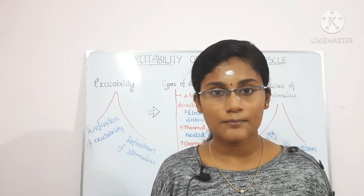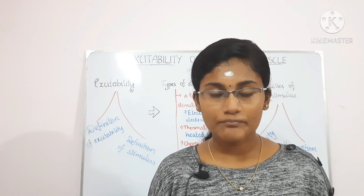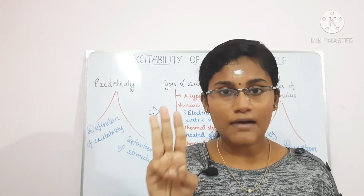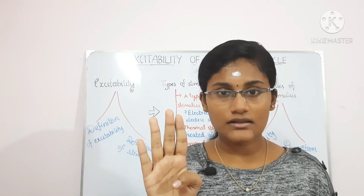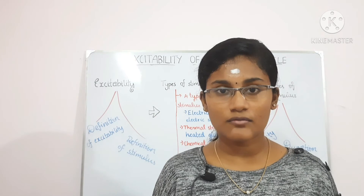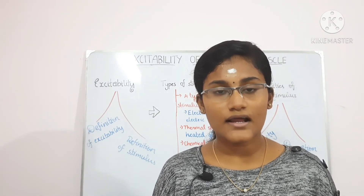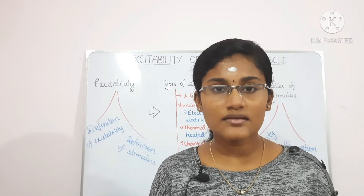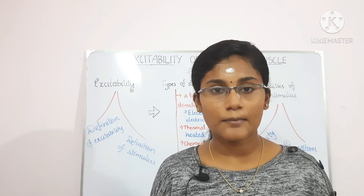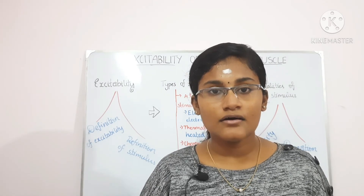Intensity of the stimulus is divided into five subtypes: subminimal stimulus, minimal stimulus, submaximal stimulus, maximal stimulus, and supramaximal stimulus. The minimal stimulus is the stimulus just sufficient to produce a response in the tissue — it is also called threshold stimulus, meaning the least stimulus that must be applied to excite a tissue.